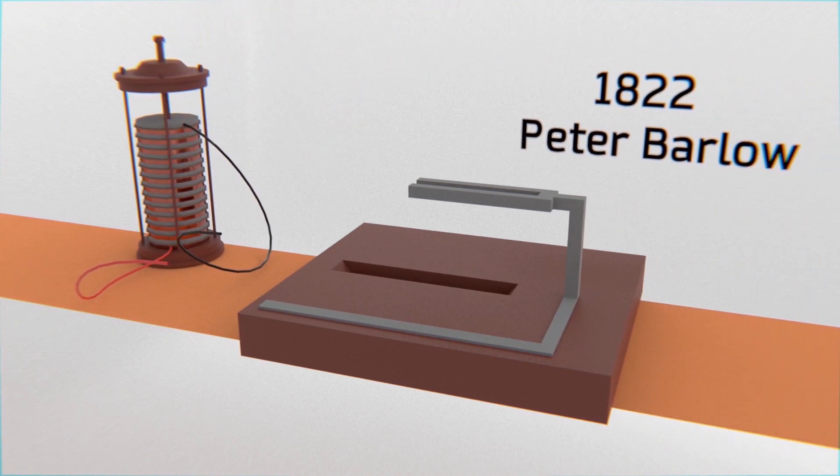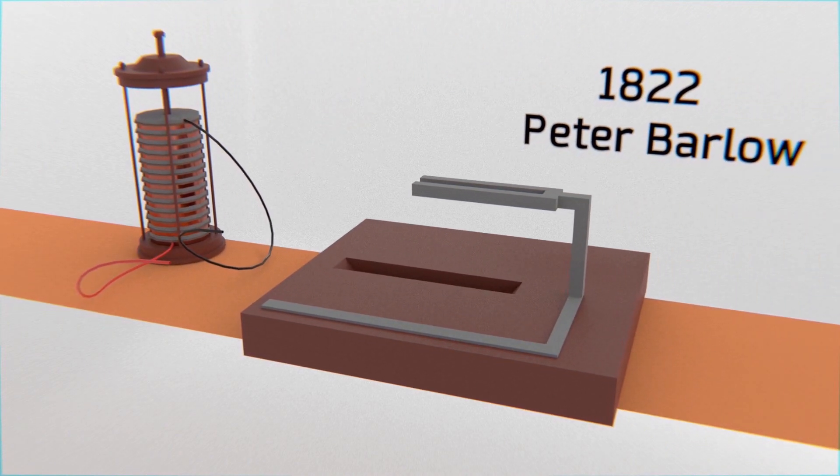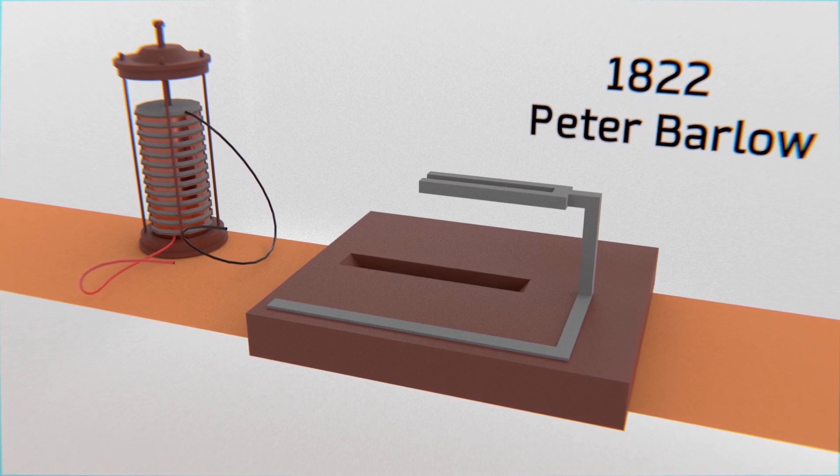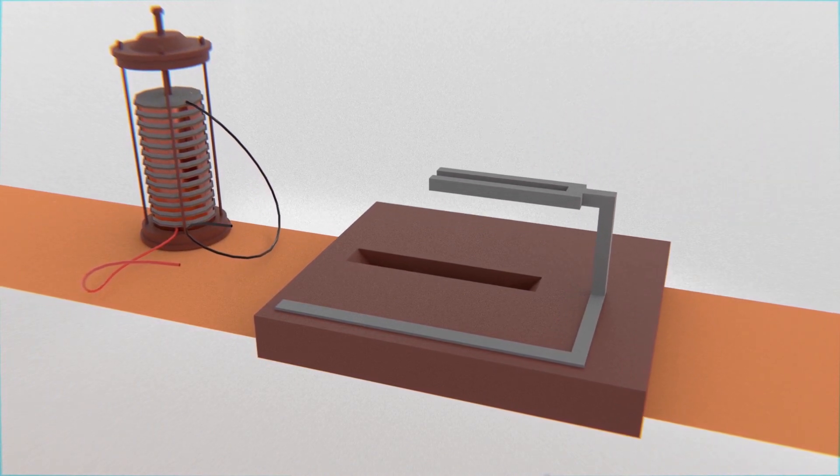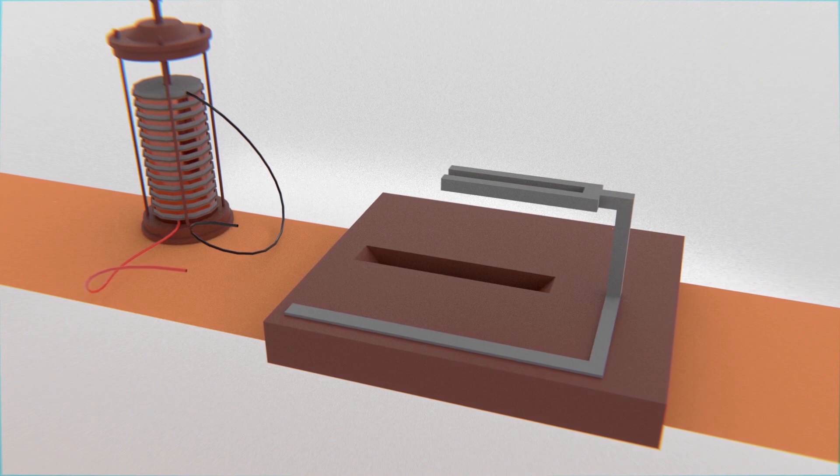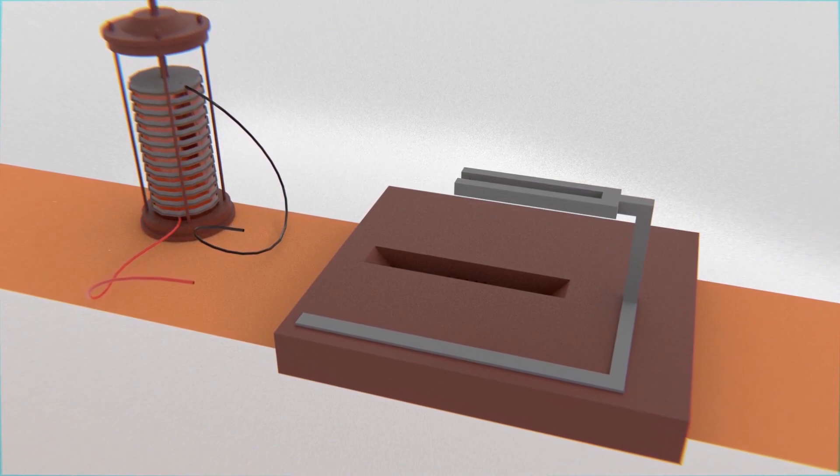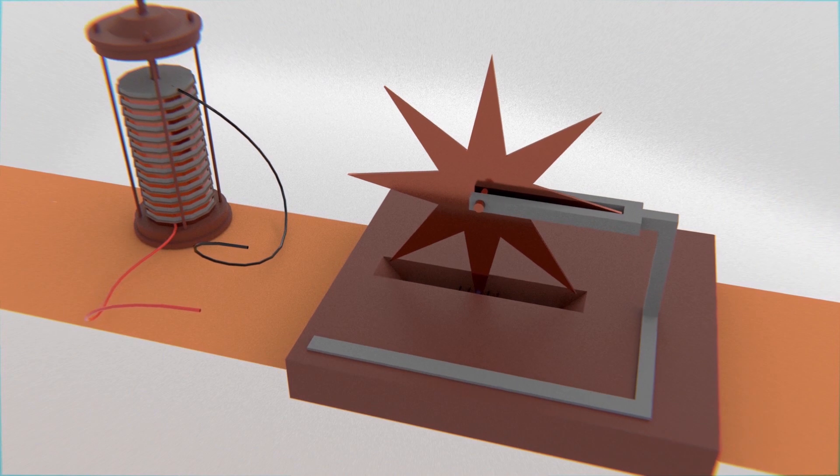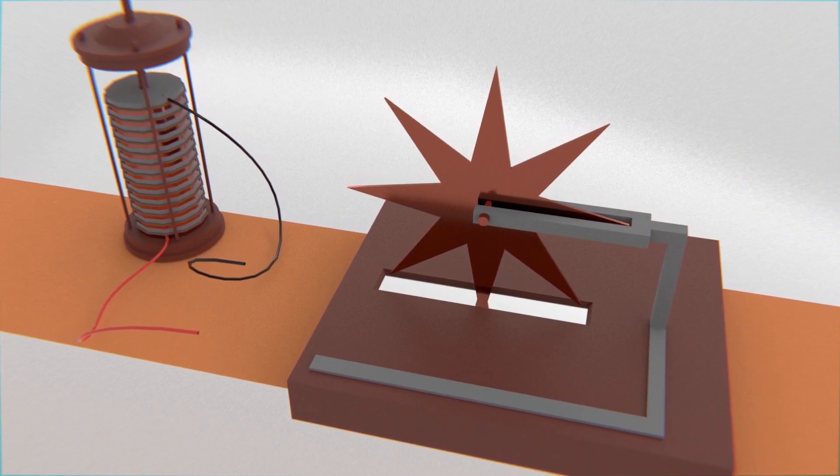Using the knowledge of Ørsted, in 1822, Peter Barlow built what is recognized as one of the first electric motors, which was composed of our battery, wires, a copper wheel, a bit of mercury and a magnet.